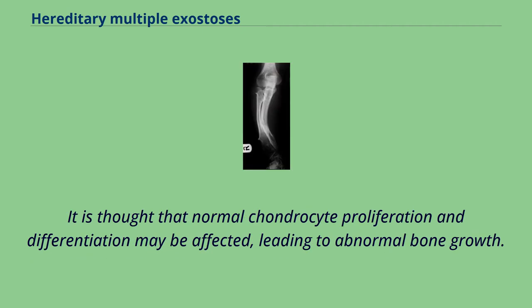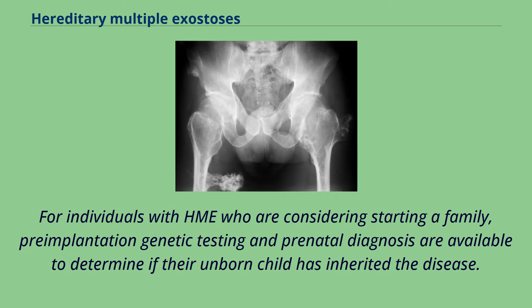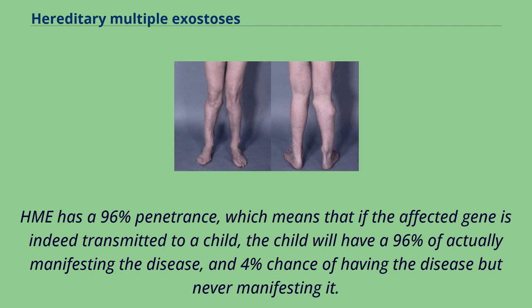It is thought that normal chondrocyte proliferation and differentiation may be affected, leading to abnormal bone growth. Since the HME genes are involved in the synthesis of a glycan, HME may be considered a congenital disorder of glycosylation according to the new CDG nomenclature suggested in 2009. For individuals with HME who are considering starting a family, pre-implantation genetic testing and prenatal diagnosis are available. HME has a 96% penetrance, meaning that if the affected gene is transmitted to a child, the child has a 96% chance of actually manifesting the disease and a 4% chance of having the gene but never manifesting it.